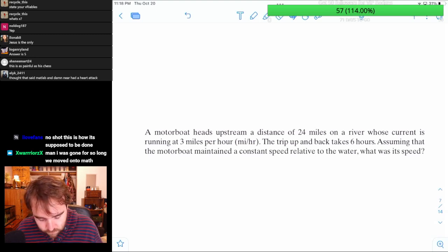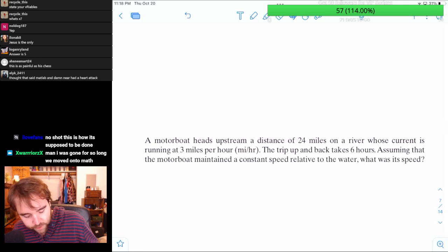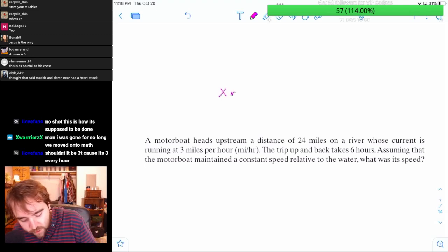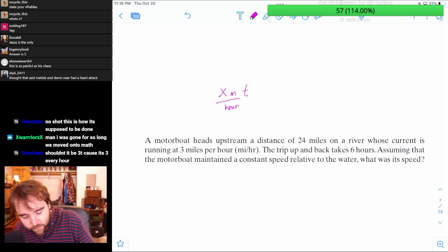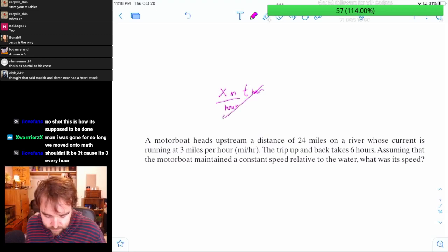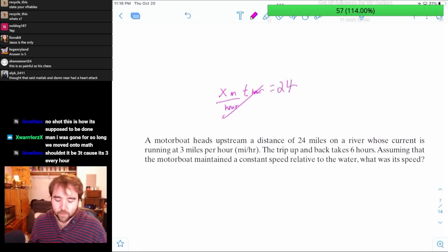I don't know my speed. My speed is X. If I take X miles per hour and multiply that by T hours, then I'm just in miles. And I know that that takes 24 miles.